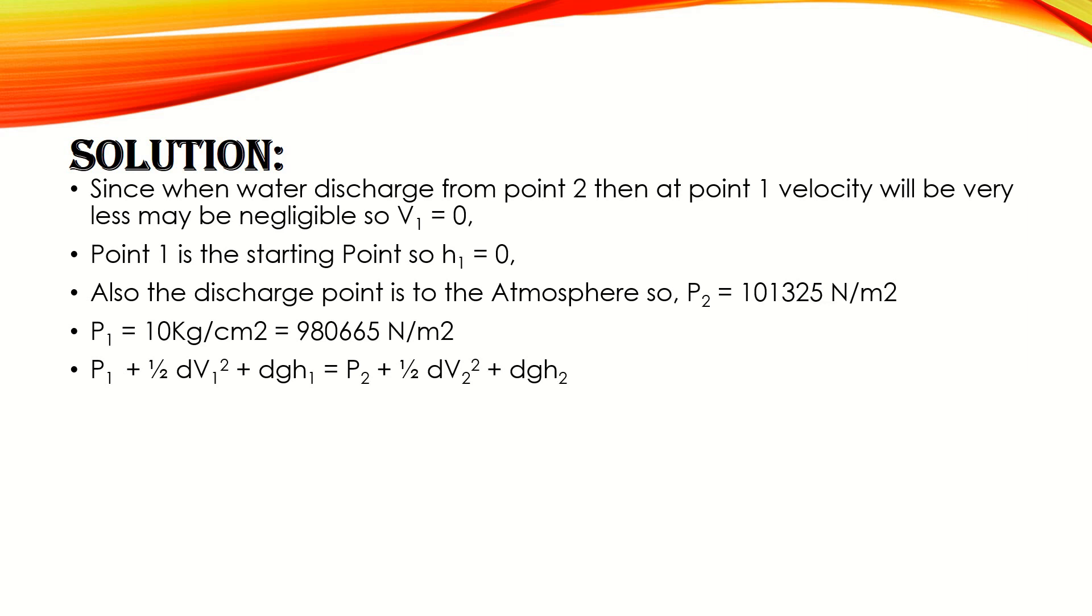Applying the Bernoulli equation and putting all the values: P1 = 980,665 N/m² plus half density of water, which is 997 kg/m³, times velocity at point one, which is zero, plus density 997 multiplied by gravitational acceleration 9.8 and height h1. h1 is the starting reference point, so it will be taken as zero.